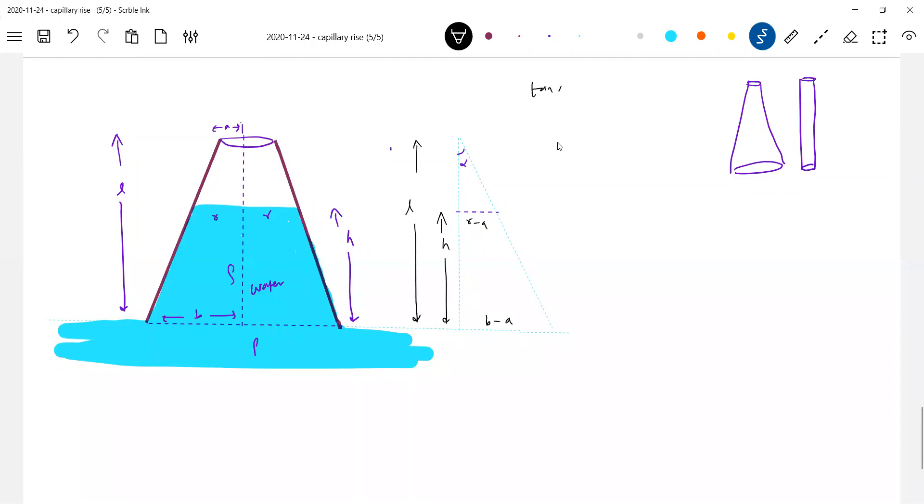What is tan alpha? R minus A by L minus H should be equal to B minus A by L. The expression for R will be B minus A, L minus H, plus C.